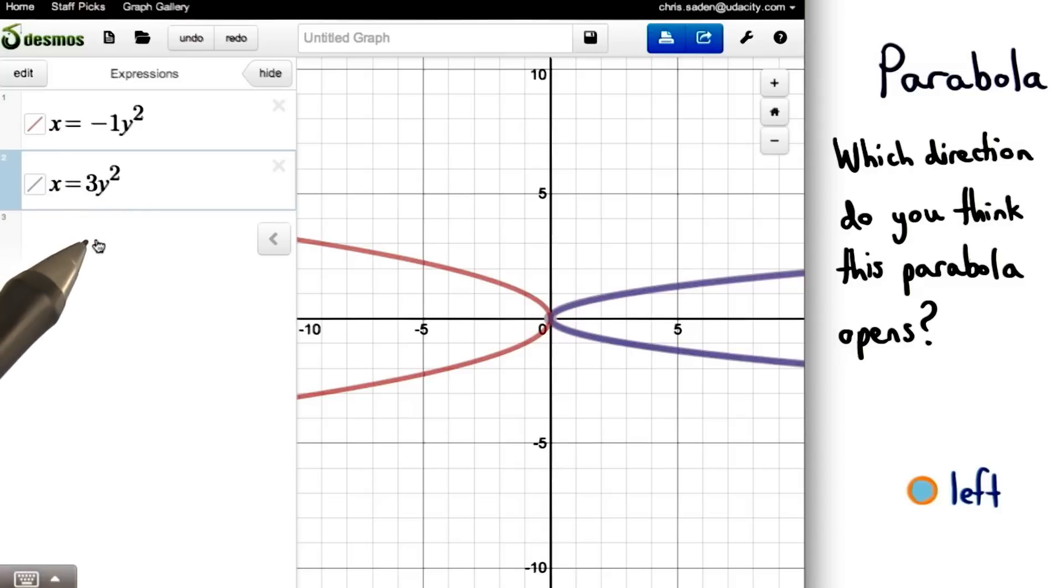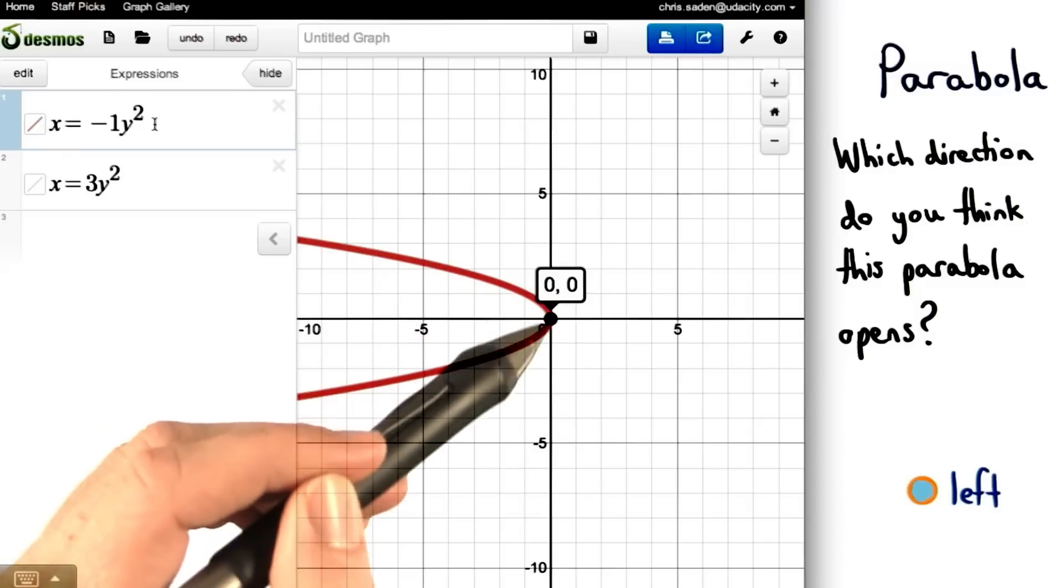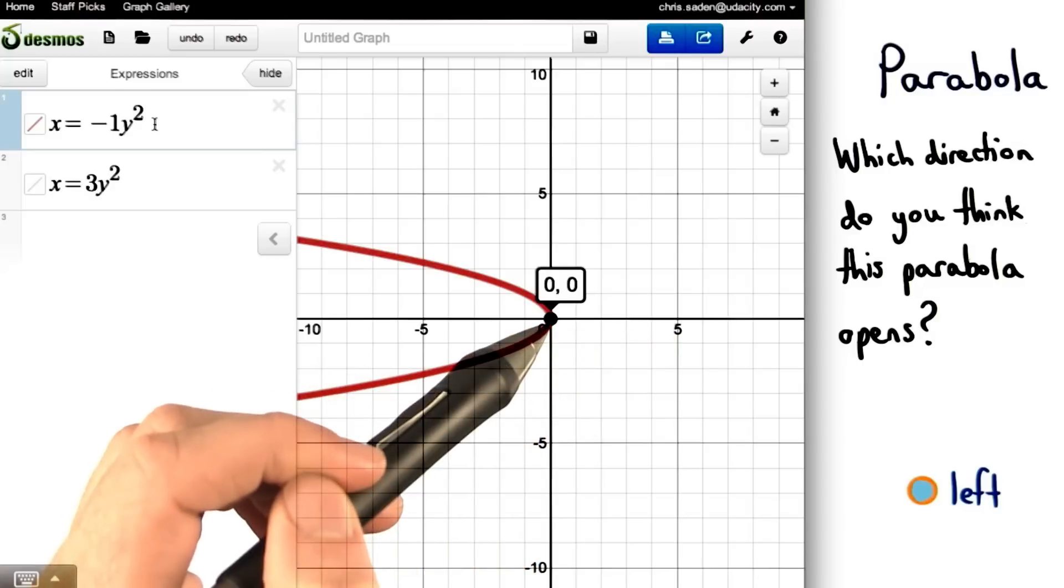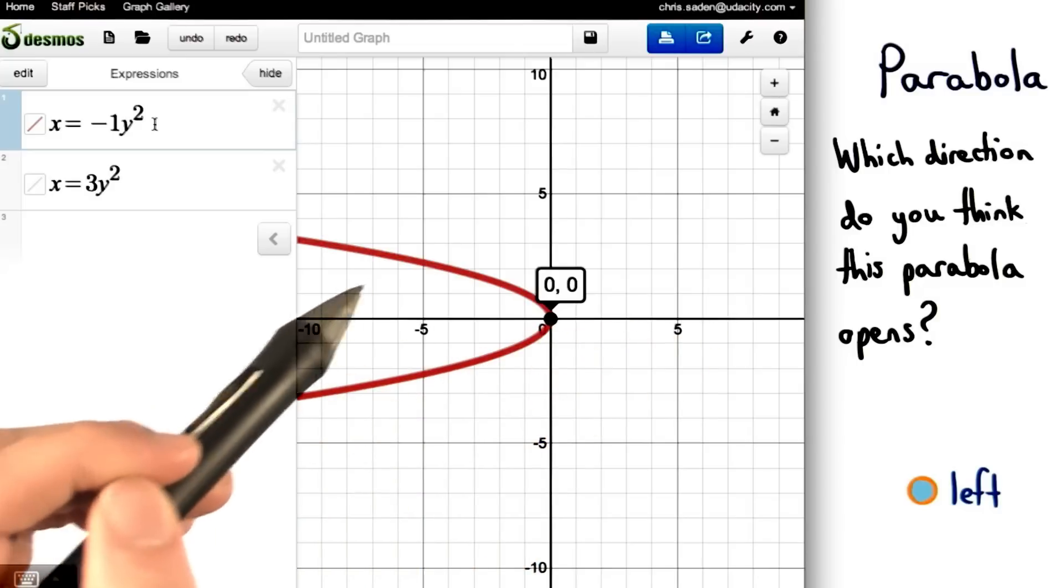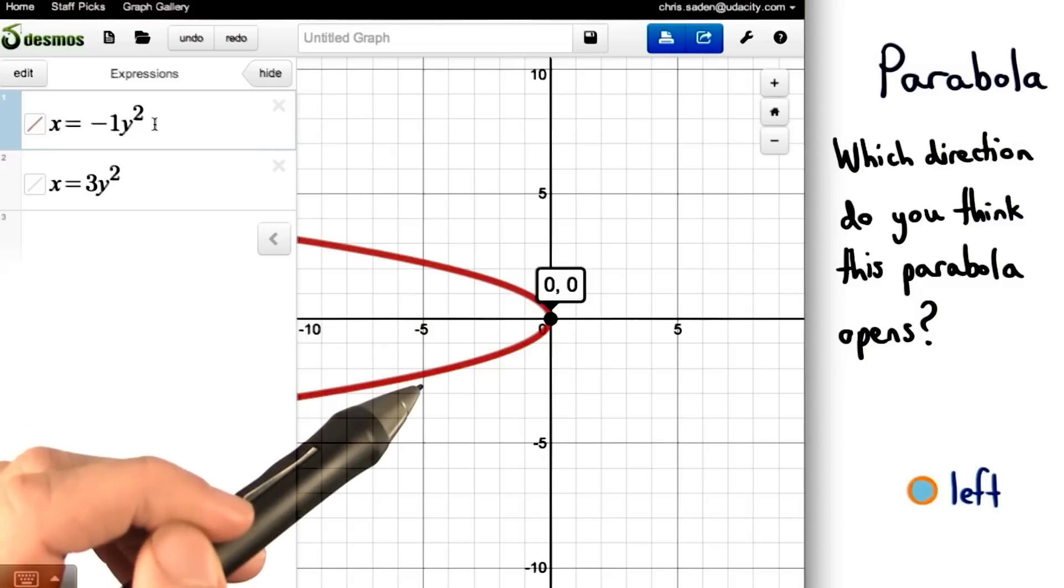Let's take this one away for a moment and just concentrate on the first parabola. Again, its vertex is at 0, 0. This is the turning point for the parabola. Notice also that there's an axis of symmetry that goes through the vertex. It means that if there's a point on this side of the graph, then directly across from it is another point.